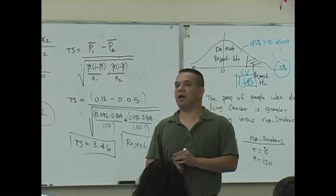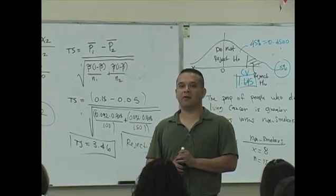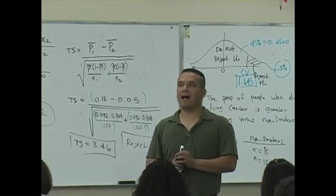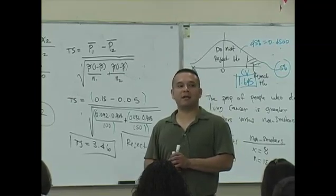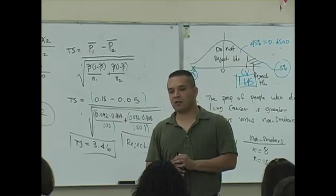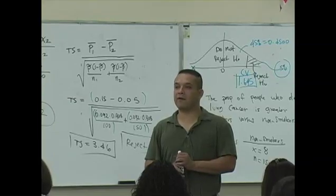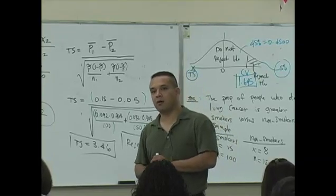The next thing that comes into play would be the critical values, finding the critical values. After that, I would probably say it's the test statistic. That's just based on my past experience with classes. The hardest part would be reading the hypothesis and trying to figure out, is it a proportion or is it a mean?